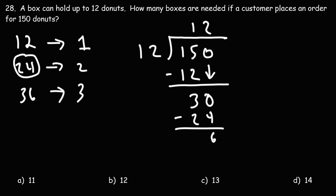If we subtract it, we get 6. Now 6 is less than 12, so that's going to be the remainder. Therefore, 150 divided by 12 is 12 remainder 6. So what does this mean?